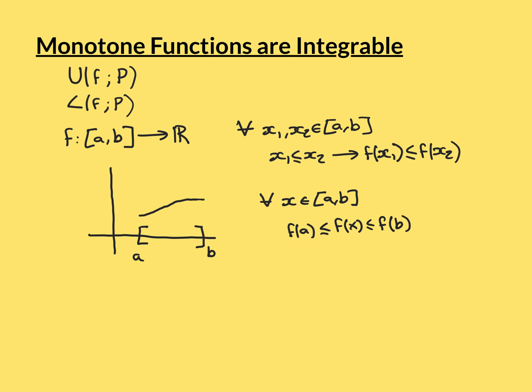And you go to the top endpoint b and ask what it's being mapped onto: f(b). Because it's monotonically increasing, you can conclude that if you take any point inside the interval [a, b], the value it's being mapped onto is always going to be less than or equal to what b is being mapped onto.